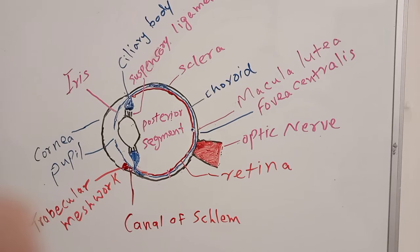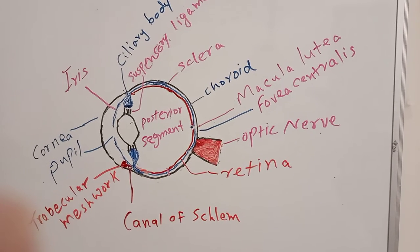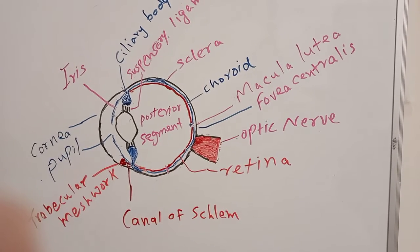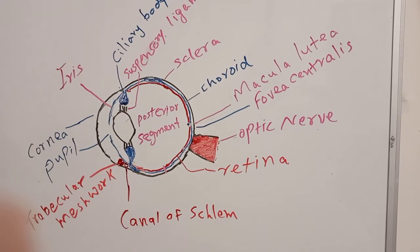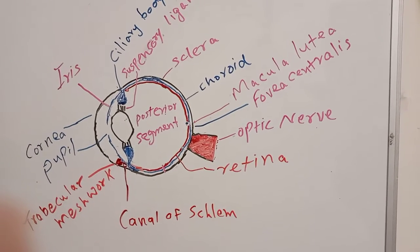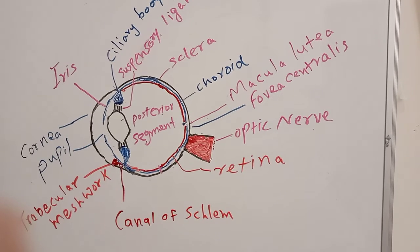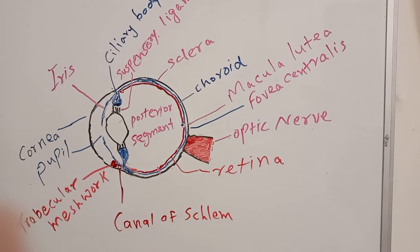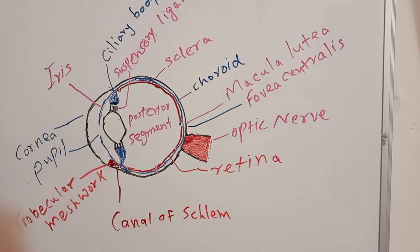Eye is a one inch globe. It is divided into two segments, anterior segment and posterior segments. The anterior segment is further divided into anterior chamber and posterior chamber.